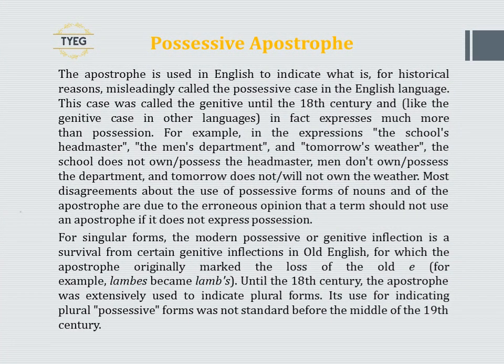The apostrophe is used in English to indicate what is, for historical reasons, misleadingly called the possessive case. This case was called the genitive until the 18th century and, like the genitive case in other languages, in fact expresses much more than possession. For example, in the expressions 'the school's headmaster', 'the men's department', and 'tomorrow's weather'...